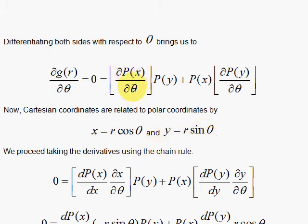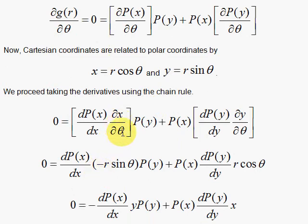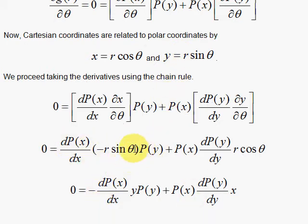We write the partial of P with respect to theta as derivative of P with respect to x times the partial of x with respect to theta, and similarly for y. The partial of x with respect to theta is minus r sine theta, and the partial of y with respect to theta is r cosine theta. Well, r sine theta is y, and r cosine theta is x.